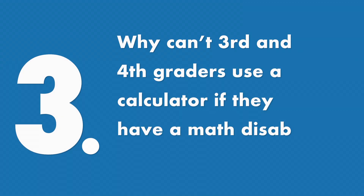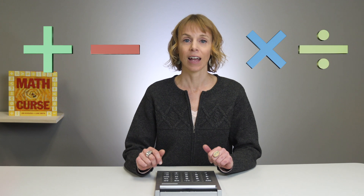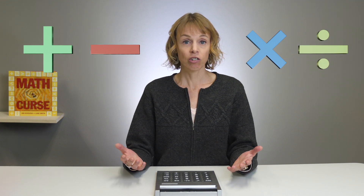Question three: why can't third and fourth graders use a calculator if they have a math disability? That's a great question, and we get asked it all the time. The test for third and fourth grade math includes using addition, subtraction, multiplication, and division. A calculation aid would be a direct source of answers for these questions. Students could use other supports — for example, a supplemental aid such as a hundreds chart, or a math manipulative like base ten blocks.